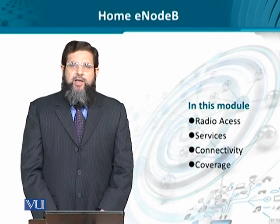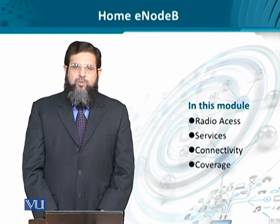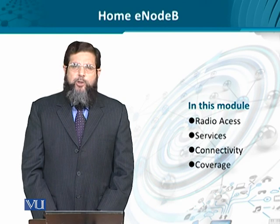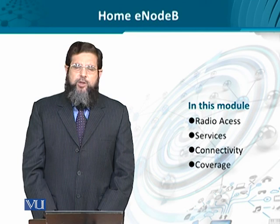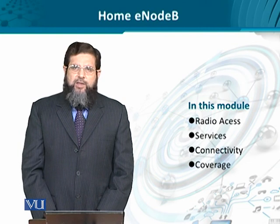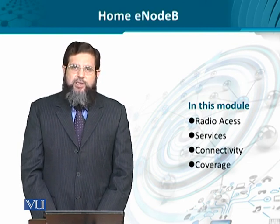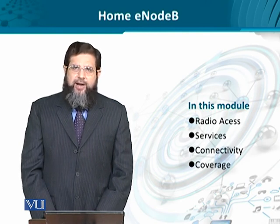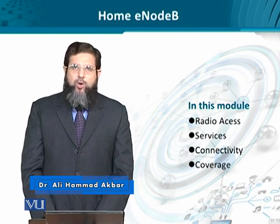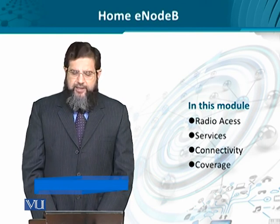Let us look at another interesting feature, in addition to carrier aggregation, that comes into the LTE radio access network side. The home eNodeB node is responsible for communicating and transferring traffic from the mobile terminal to the core network, that is the evolved packet core. The evolved packet system is so much dependent on home eNodeB or eNodeB that we need to understand it in a little more detail.